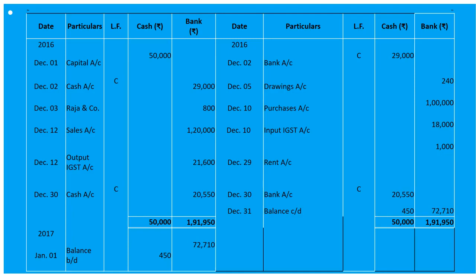On December 29th, paid rent by cheque — since this is a payment we record it on the credit side of the cash book: 'By Rent' on December 29th, and since payment was made by cheque we record it under the bank column.